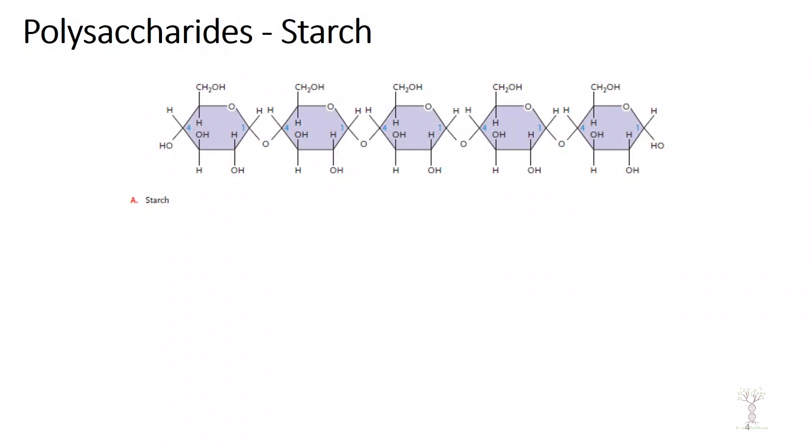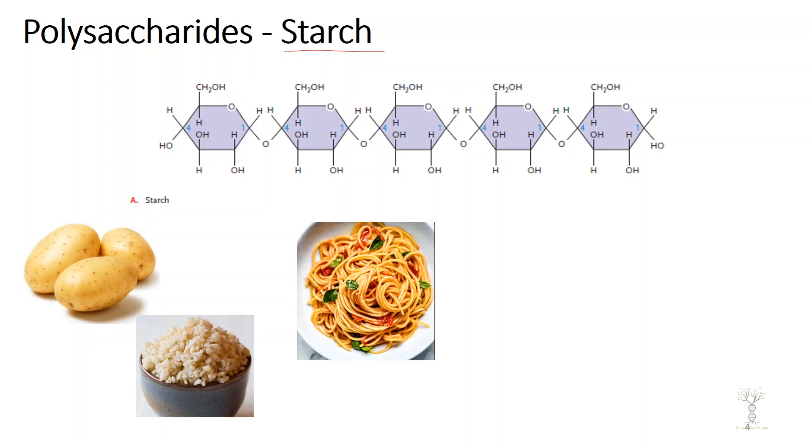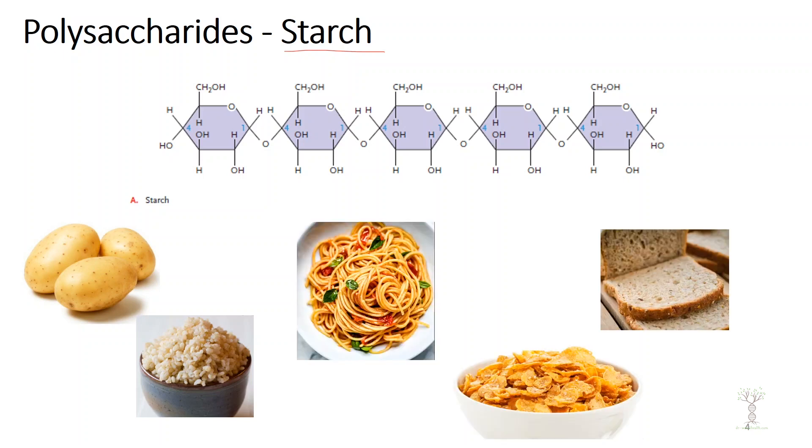That covers our simple sugars. Simple carbohydrates are the monosaccharides and the disaccharides — there are six of them in total. The next category is our complex carbohydrates, called polysaccharides. The first polysaccharide is starch. We often think of starches as foods like potatoes, rice, pasta, cereal, and bread.